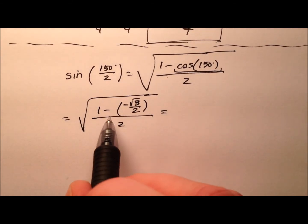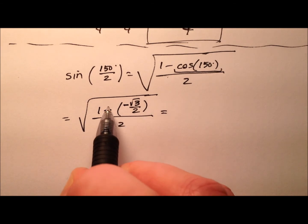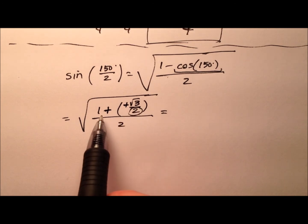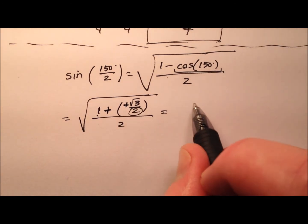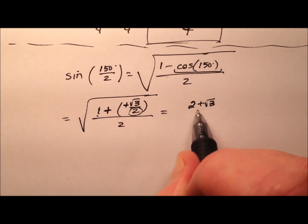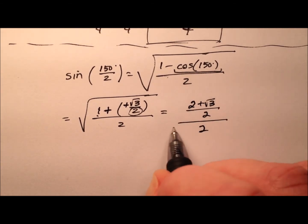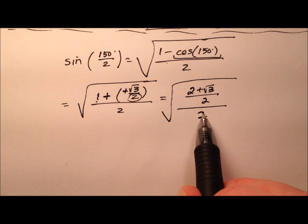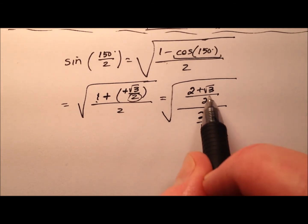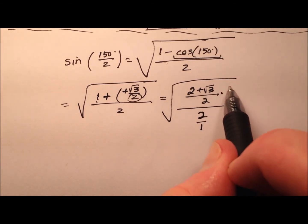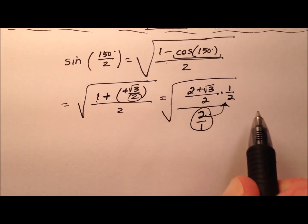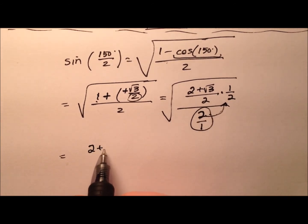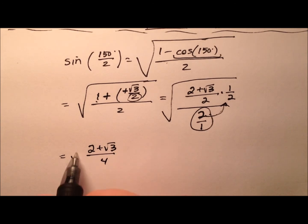Let's polish this up. We have minus a negative, so it becomes an addition problem. Getting a common denominator for the numerator, I multiply the 1 by 2 over 2, giving us 2 plus the square root of 3 over 2. All of that is over 2 and inside the square root. Since we're dividing by 2 over 1, I multiply by the reciprocal, so we end up with 2 plus the square root of 3, all over 4, underneath the radical.